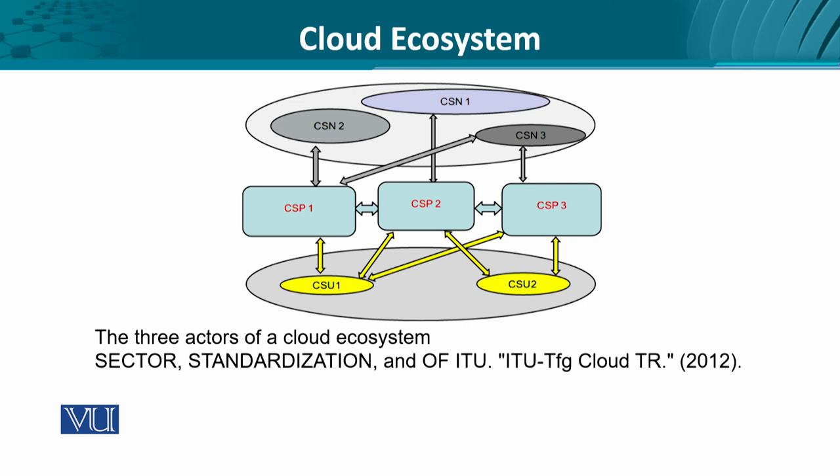So here we see that on the access side, the cloud service user uses the provider to have access to the partners and the partner-associated services. So we have service providers bridging between the service users and the third-party networks.